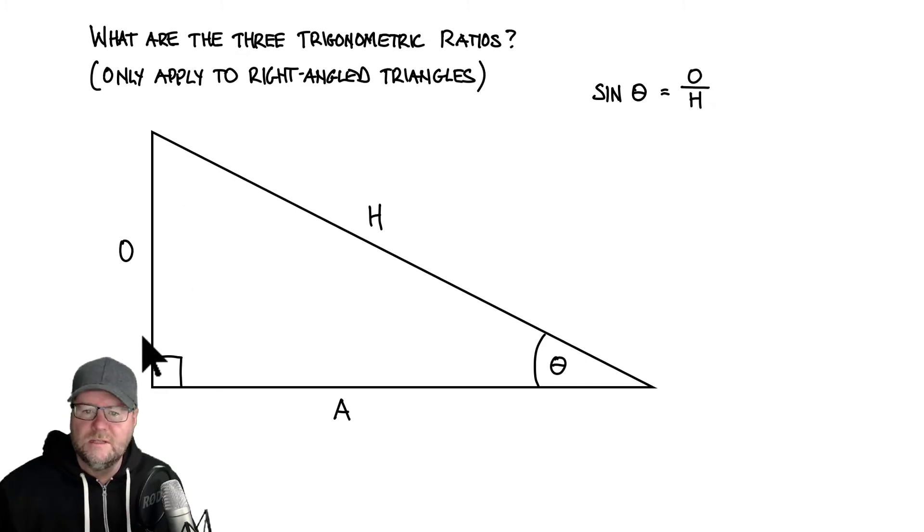So whatever the length of the opposite is, you put it on top of the fraction and whatever the length of the hypotenuse is, it goes on the bottom of the fraction. We'll look at some examples with numbers in a minute, but let's just get the ratios out of the way first. The second ratio is our cos ratio.